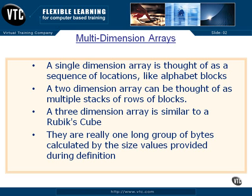Even though there are two different rows of data, these items are one long contiguous group of bytes in memory. They are strung out one after the other, and we get to them by calculating the row sizes and adding the final element on the right-hand side — the least significant value — to get the offset into the array, into the row.